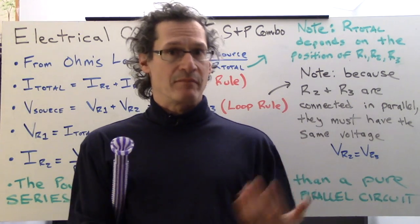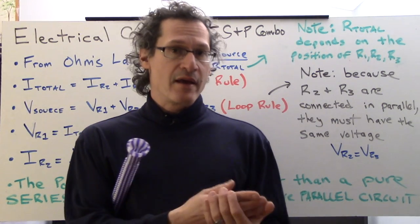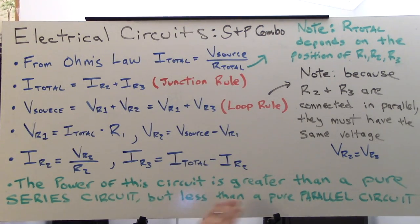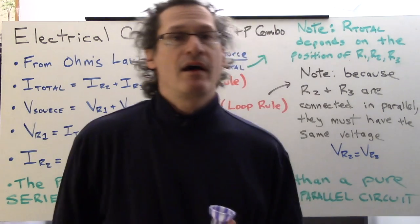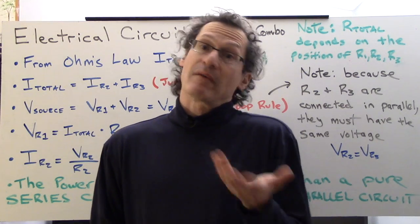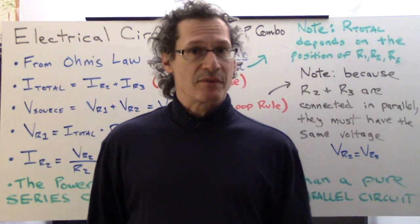And the parallel allows the most free flowing current, and so we have the most power. So it's somewhere in between. The power of this circuit is greater than a pure series circuit, but less than a pure parallel circuit. So if you were to try and calculate and you got an answer higher than the parallel, you probably did something wrong. Lower than the series, you did something wrong. It's a good gut check.